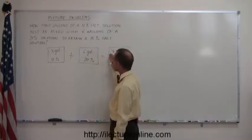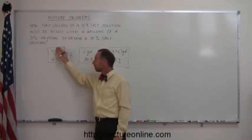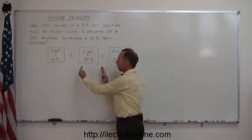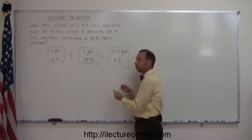If these are salt solutions, then when you multiply the amount of gallons by the percentage, you get the total amount of salt in that solution. When you multiply these together, you have the total amount of salt in this solution, and when you multiply these two together, you have the total amount of salt in this solution.